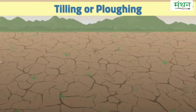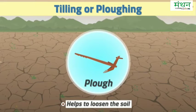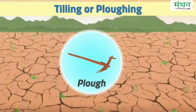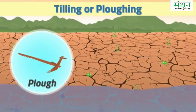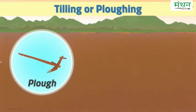How is tilling and ploughing done by man? Have you heard of an equipment called a plough? It helps to loosen the soil. But what if the soil is hard — would it be easy to plough? No, it won't be. Hence the soil may have to be watered before ploughing.